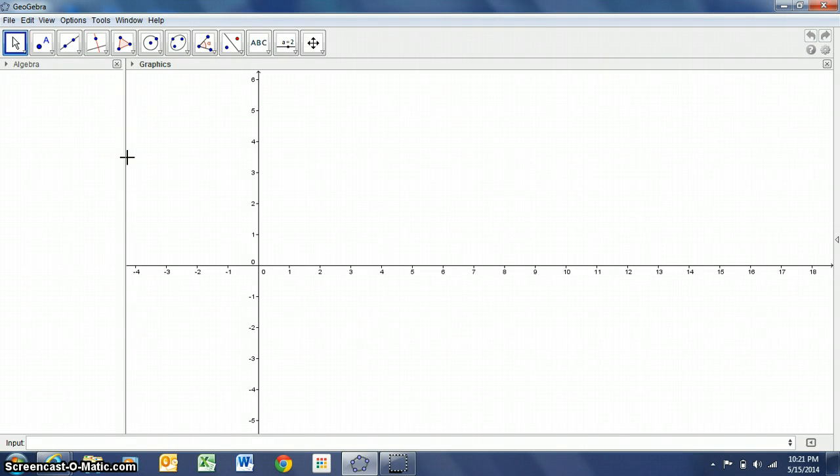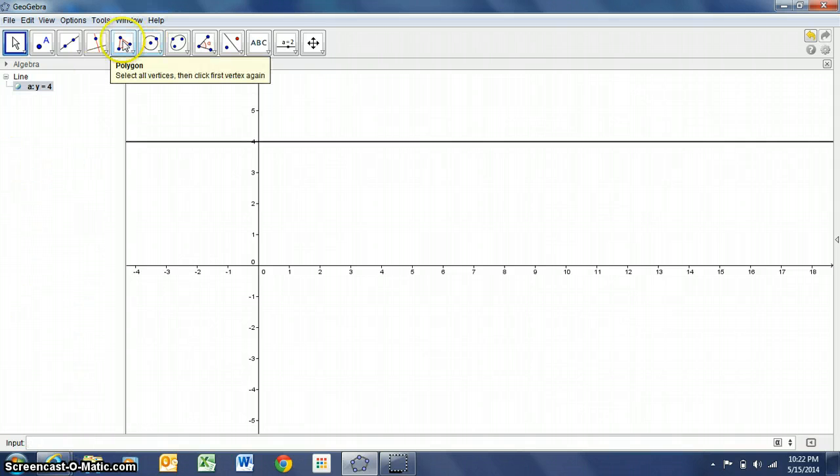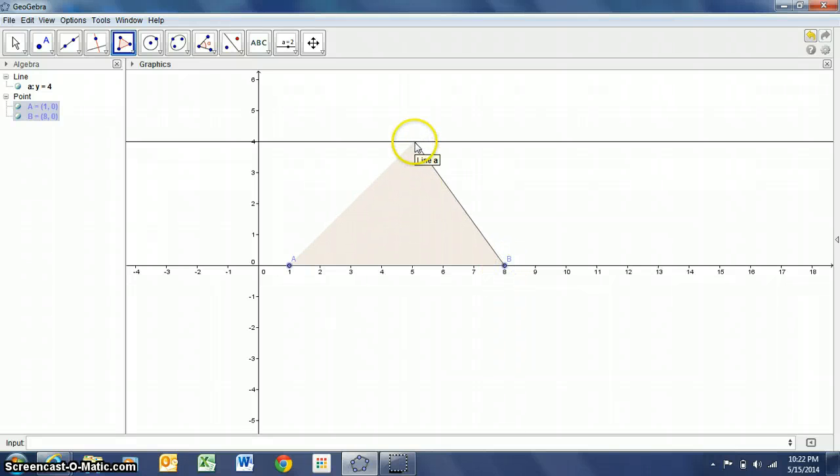Is verifying things like the area of a triangle is constant regardless of its height. I'll show you what I mean by that. So I'm going to put a horizontal line in at y equals 4, and I'm going to build a polygon based on some vertices. So I'll put a vertex down here at one zero, maybe at eight zero, and then up here on my line somewhere.